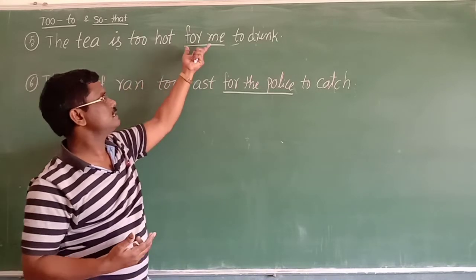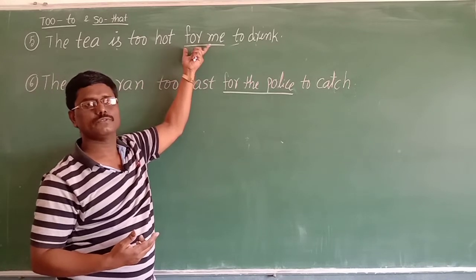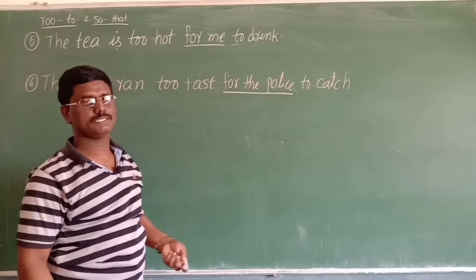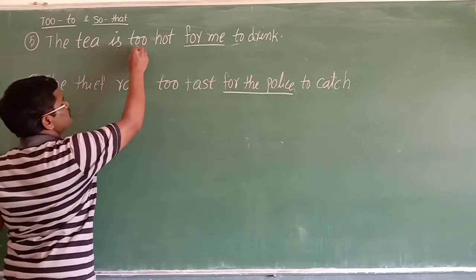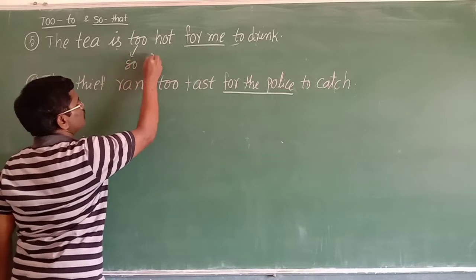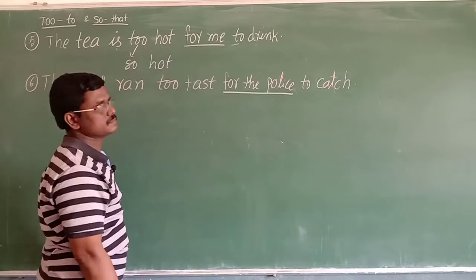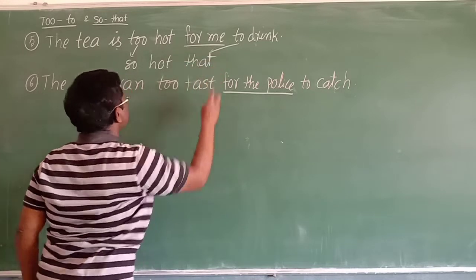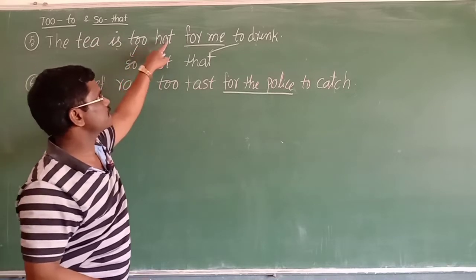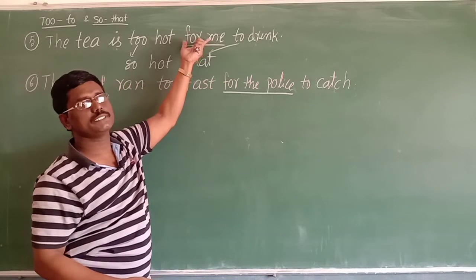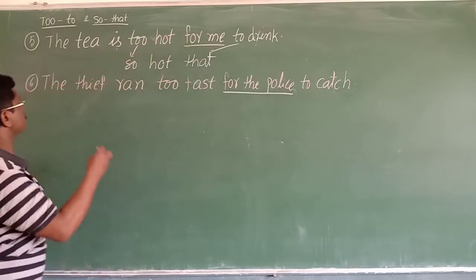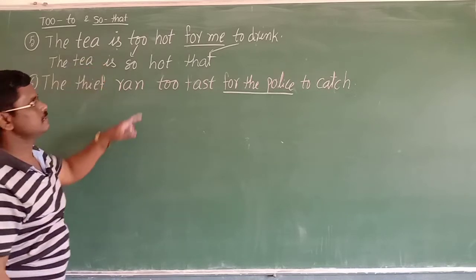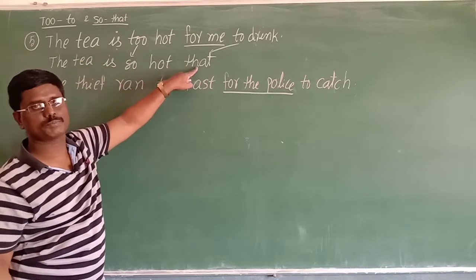The second rule: the change is for sentences with 'for phrases' — for me, for us, for you, for them, for the police, for the child. When changing 'too...to' with a for-phrase into 'so...that', the subject doesn't change up to the adjective. For example: 'The tea is too hot for me to drink.' Up to 'so hot that' it remains as is.